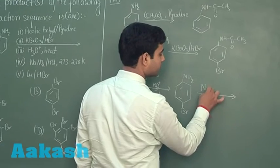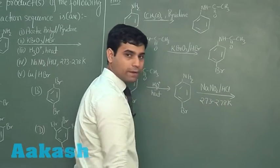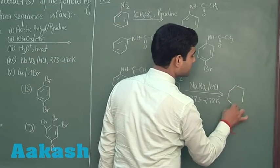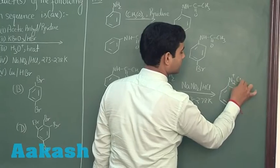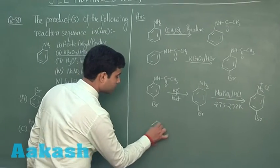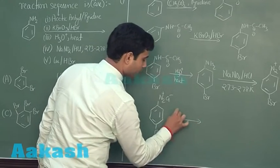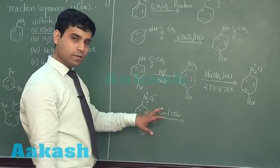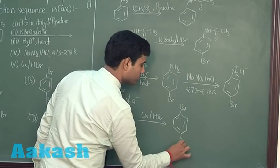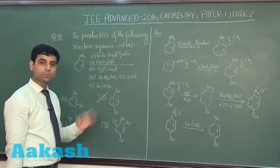Benzene diazonium chloride will be formed when it reacts with NaNO2 and HCl at temperatures 273 to 278 Kelvin. This will give us benzene diazonium chloride, which reacts with copper and HBr gives us bromine, which is Sandmeyer reaction. If I take copper and HBr, in place of N2Cl, Br will be substituted. We get para-dibromobenzene. The correct answer is option B in which we have para-dibromobenzene. Now let us move to the next question.